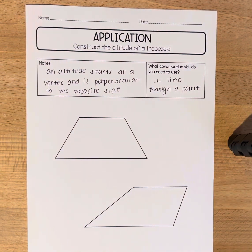In this video we'll be learning how to construct the altitude of a trapezoid. So first some notes, an altitude starts at a vertex and is perpendicular to the opposite side.